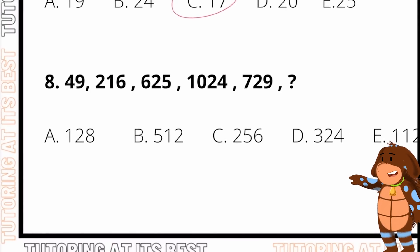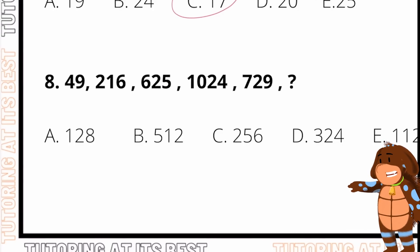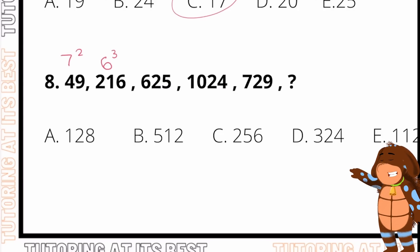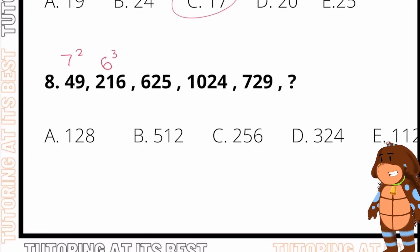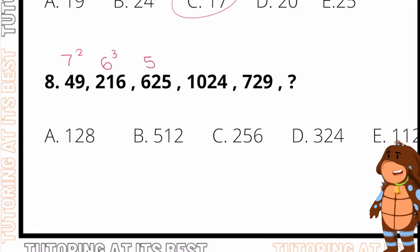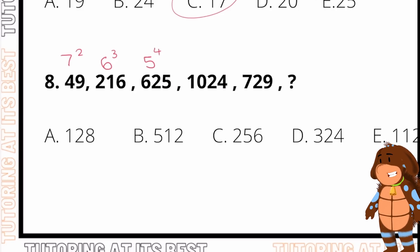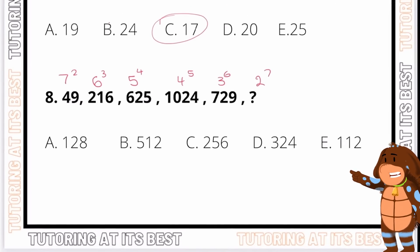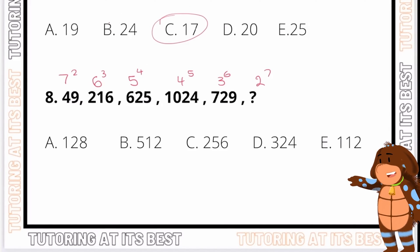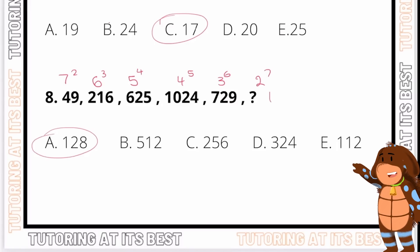For question eight, numbers are increasing and it looks like we're working with squared and cubed numbers. 49 is seven squared, and 216 is six cubed. But for 625 — perhaps it's going down in base and increasing in exponent: five to the power of four, four to the power of five, three to the power of six, and then two to the power of seven. Calculating two to the power of seven gives us 128.